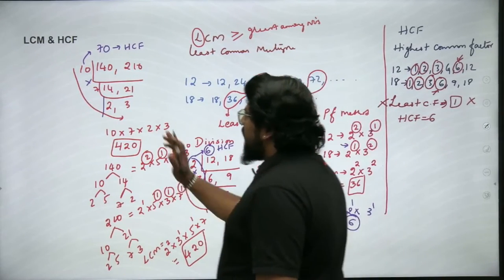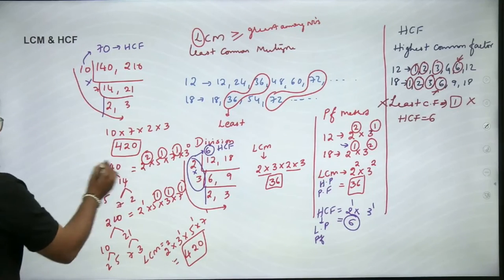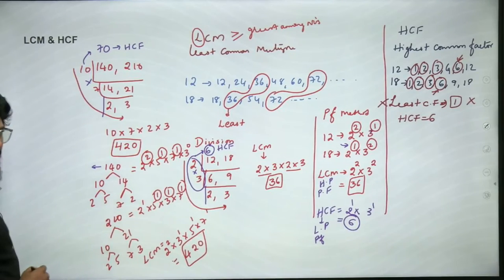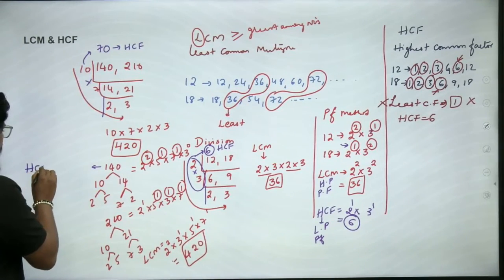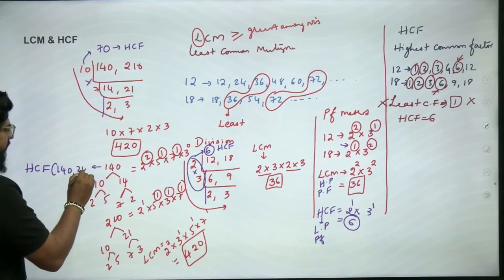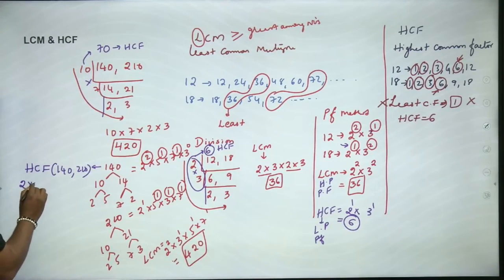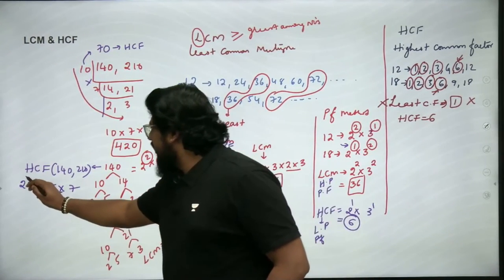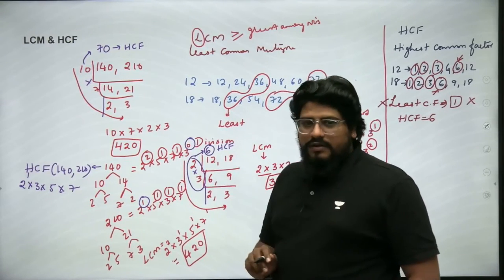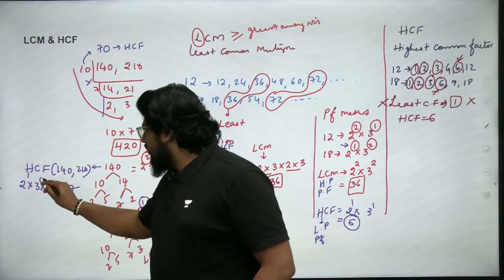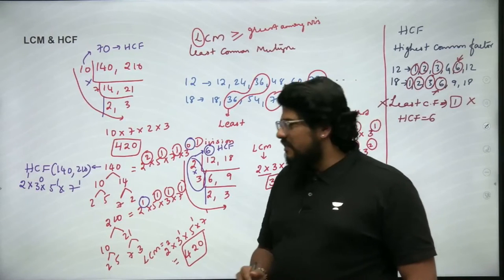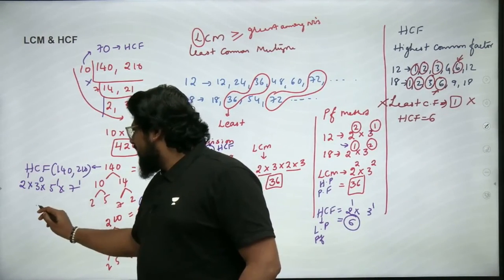Now for 140 and 210: 140 = 2² × 5¹ × 7¹ × 3⁰, and 210 = 2¹ × 5¹ × 3¹ × 7¹. The prime factors are 2, 3, 5, and 7. Taking the least powers: 2's least power is 1, 3's least power is 0, 5's least power is 1, 7's least power is 1. So HCF = 2¹ × 3⁰ × 5¹ × 7¹ = 2 × 1 × 5 × 7 = 70.